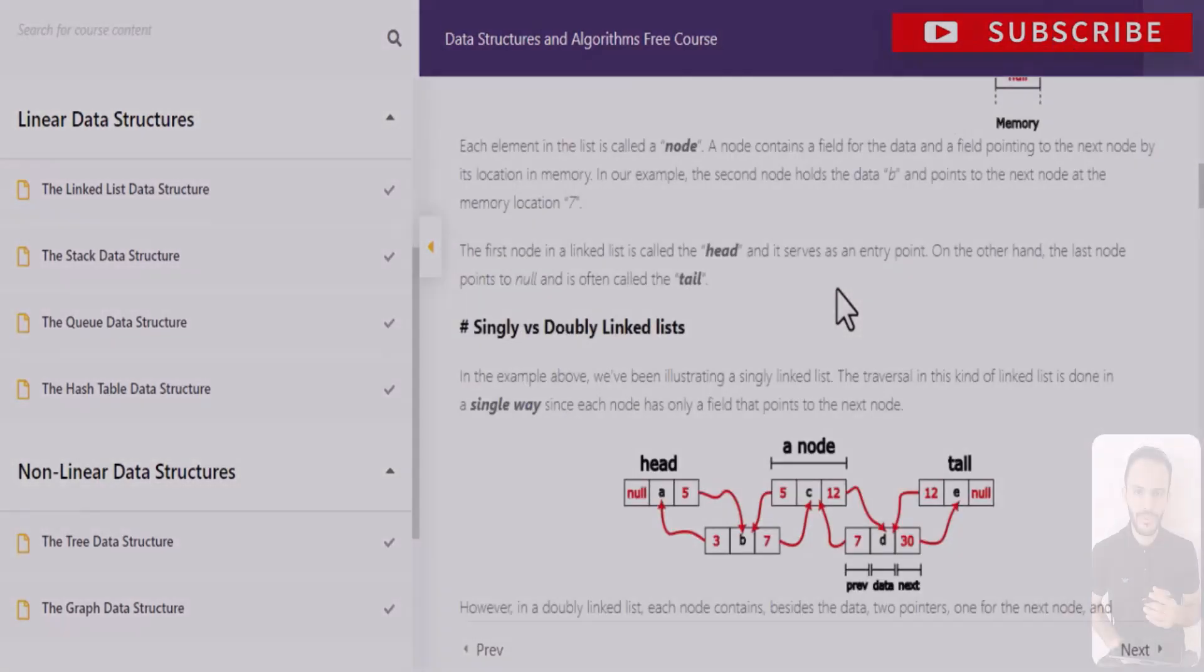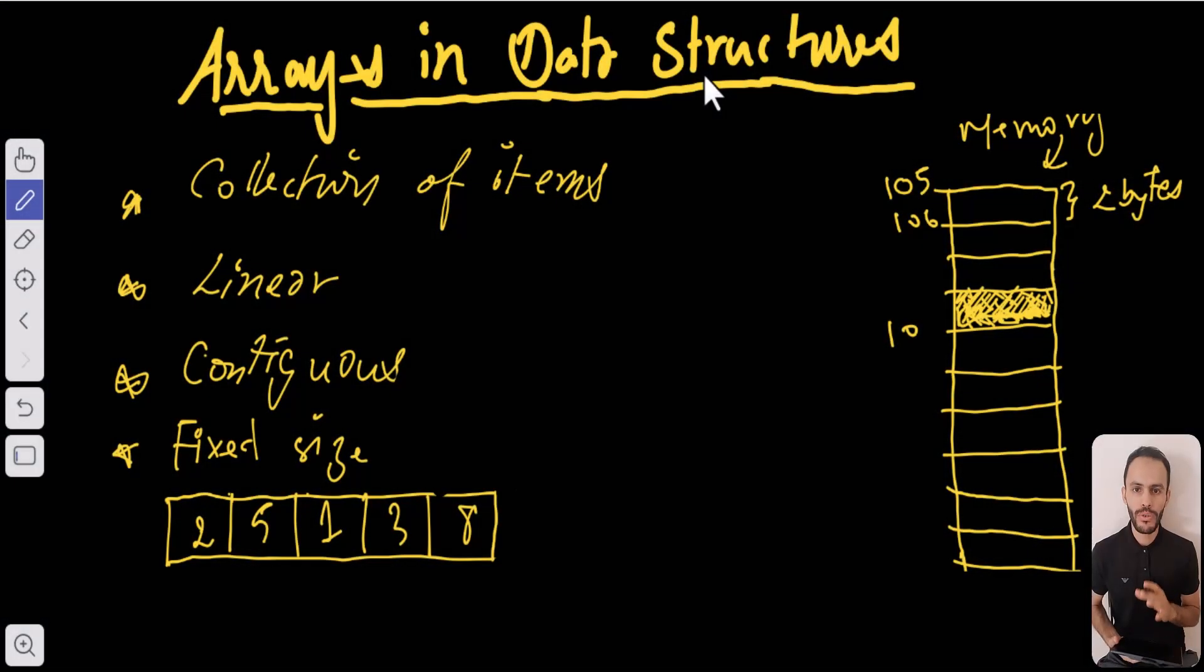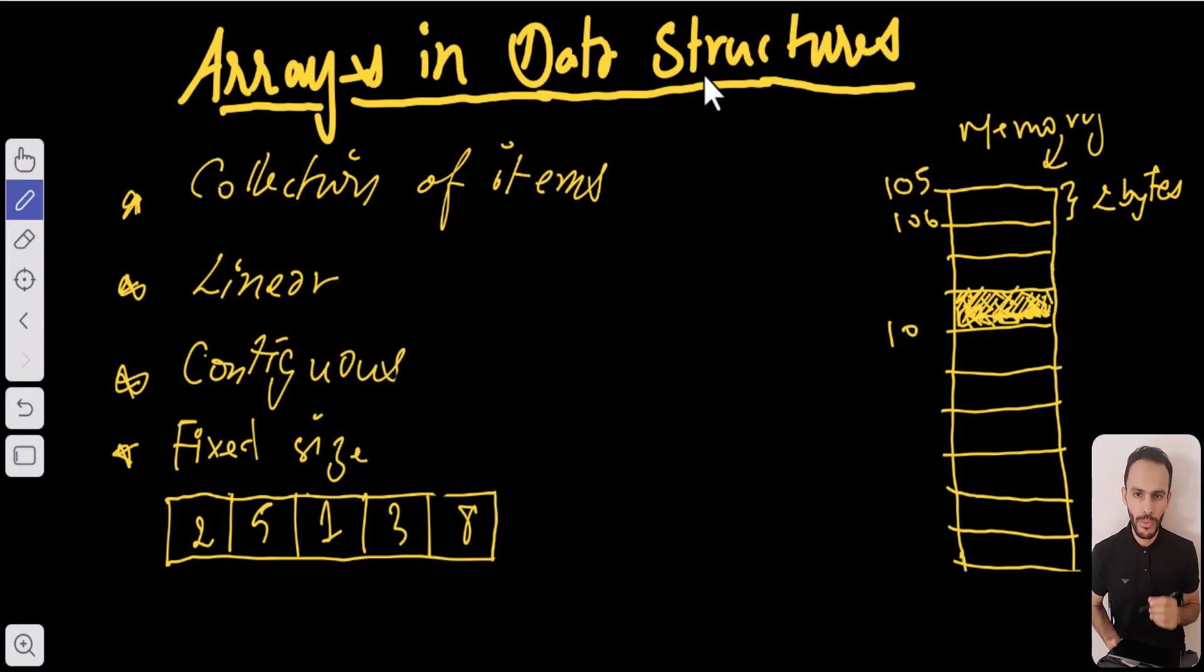The first question we're going to ask is: what are arrays? Arrays are a collection of items of the same type, usually. The second point about arrays is they are linear data structures. So what do we mean by that?